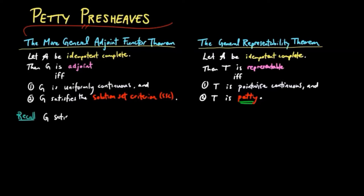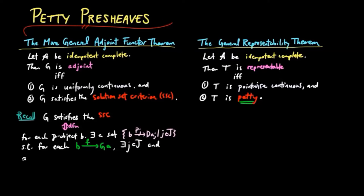So let's recall G satisfies the solution set criterion if and only if for each B object B, there exists a set of morphisms P_J from B to G(A_J), such that for each morphism F from B to G(A), there exists an index little j in big J and a morphism H from A_J to A, such that G(H) composed with P_J equals F.